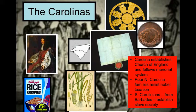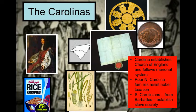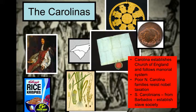The Carolinas established the Church of England and had a kind of manorial system, like we talked about last chapter, brought over from England. Poor North Carolina families worked really hard to resist all of the taxation, because the wealthy always like to tax the poor. South Carolina also established a slave society, bringing in slaves from Barbados. Remember that the Carolinas are going to be really big for rice and different grains.